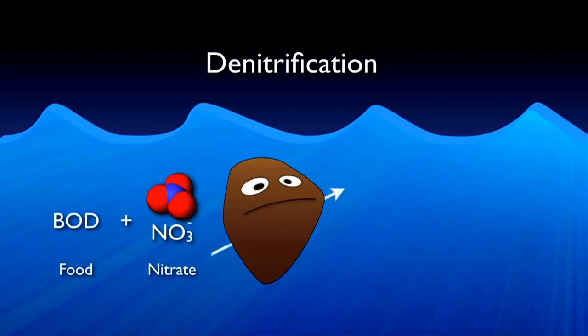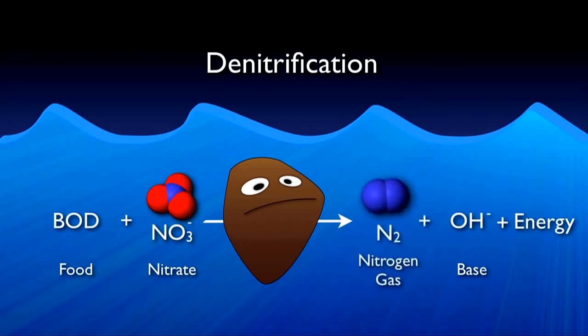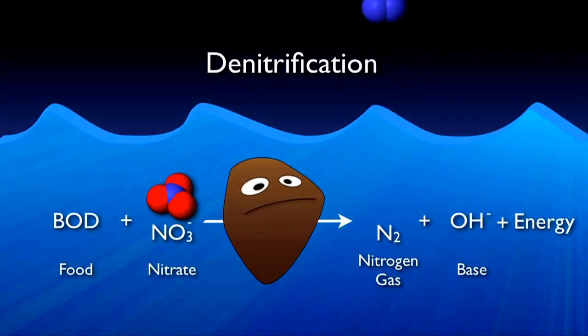These bacteria take the BOD and nitrate to produce energy, base, and nitrogen gas. The base is useful in buffering the acid produced during nitrification. The nitrogen gas then floats in tiny bubbles to the surface and into the atmosphere. Though denitrification is great in the biological basin, denitrification occurring in a clarifier can result in undesirable floating sludge.